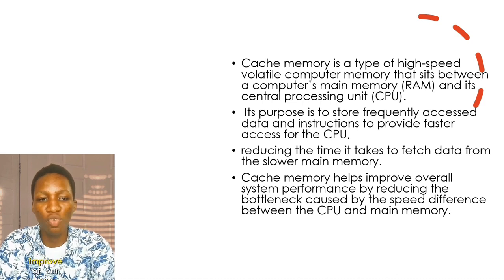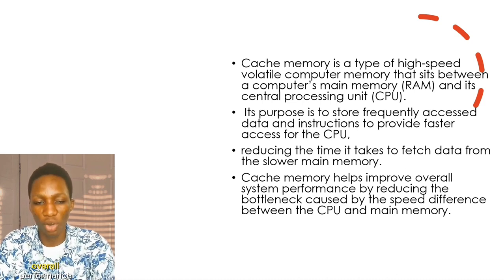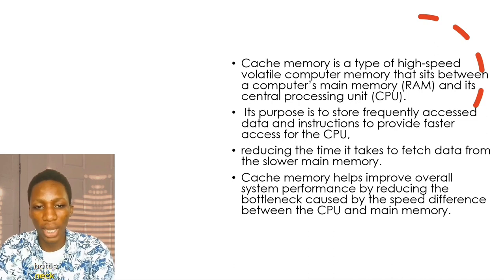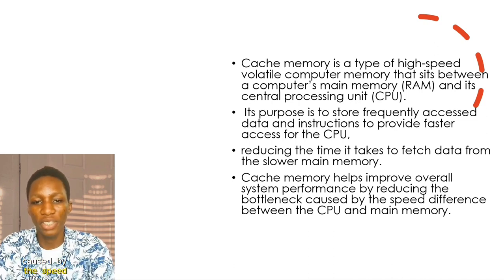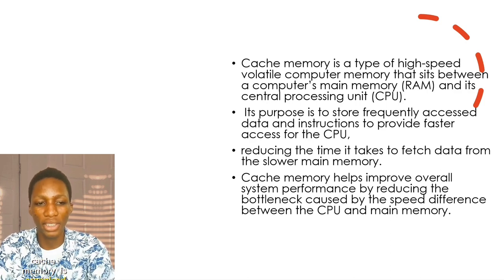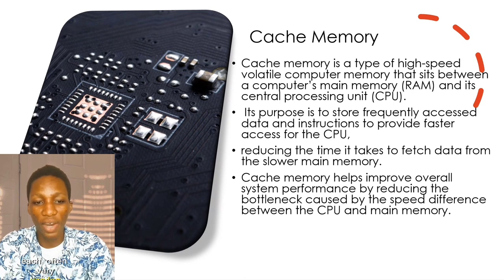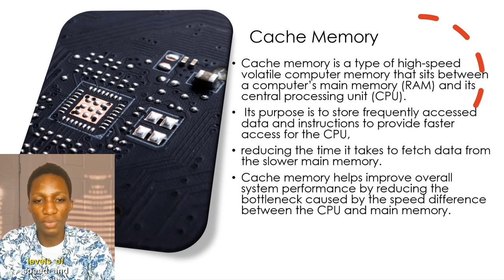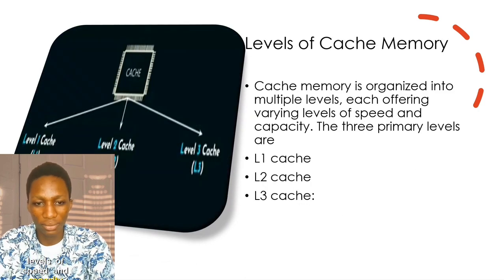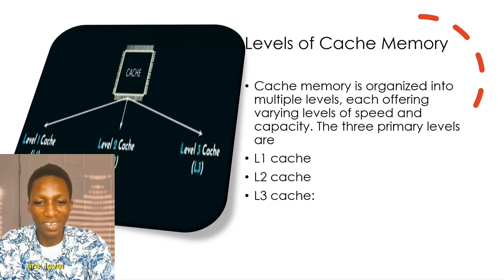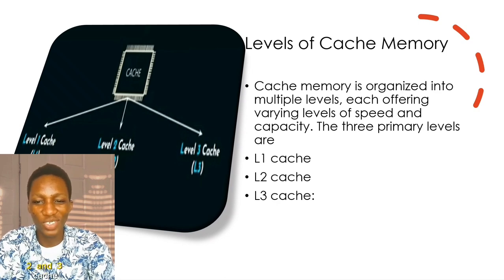Cache memory helps improve overall performance by reducing the bottlenecks caused by the speed difference between the CPU and the main memory. Cache memory is organized into multiple levels, each offering varying levels of speed and capacity. The three primary levels are level 1, level 2, and level 3 cache.